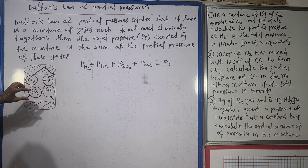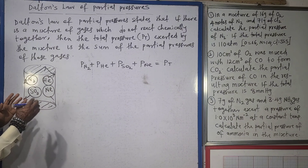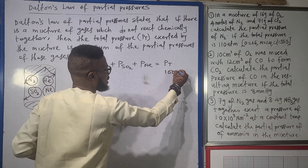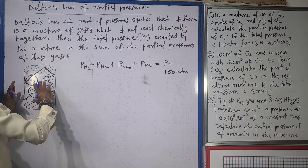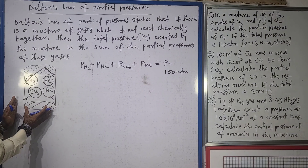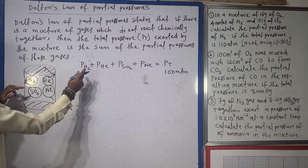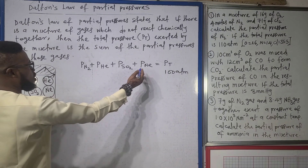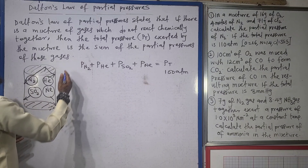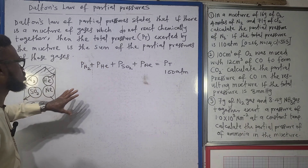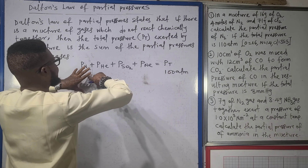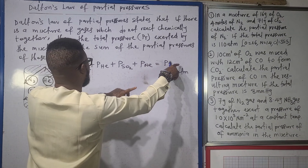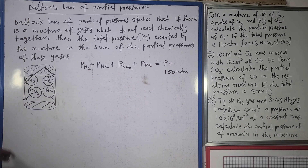For example, imagine that the total pressure here is 100 atmospheres. Then that 100 atmosphere pressure in this containing vessel is going to be the pressure of nitrogen plus the pressure of helium plus the pressure of sulfur dioxide plus the pressure of neon. The pressure of the individual gases is what we call partial pressure, so the total pressure is the sum of the partial pressures of the individual gases.